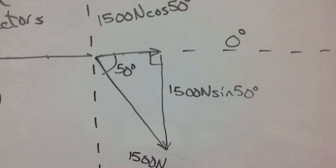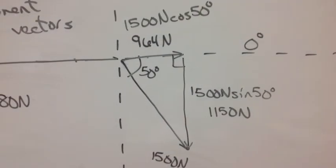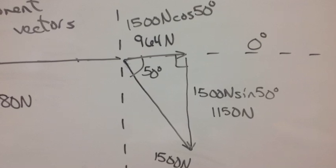We do the exact same thing for the other vector to find its replacement components of 964 newtons and 1,150 newtons.